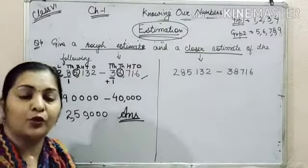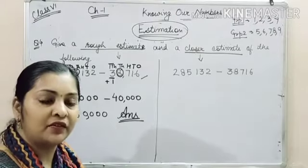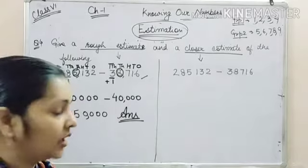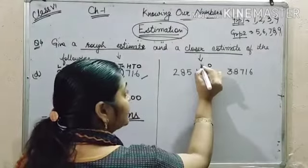Now we have to do closer estimation. I told you in the previous problem that whenever we have to do closer estimation, we always round off the numbers to nearest 10s.